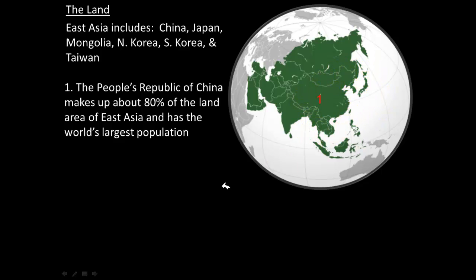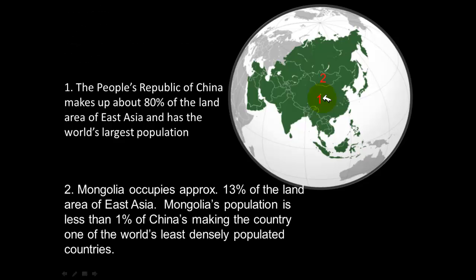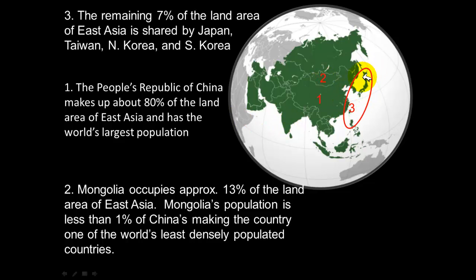About 80% of this region is the People's Republic of China, which also has the world's largest population. The second country we'll highlight is Mongolia, located right above China. It has approximately 13% of the land of East Asia, but its population is less than one percent of China's, making Mongolia one of the least densely populated countries in the world. The remaining 7% is made up of Japan, Taiwan, North Korea, and South Korea.